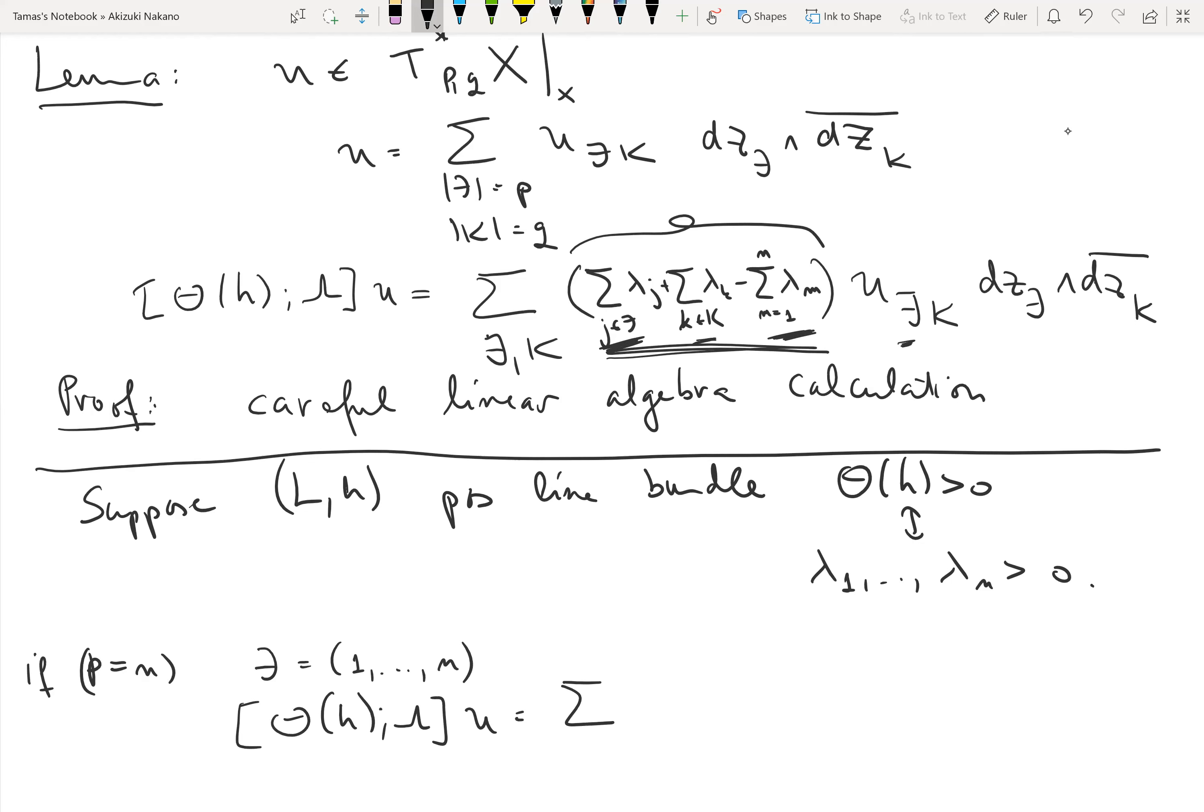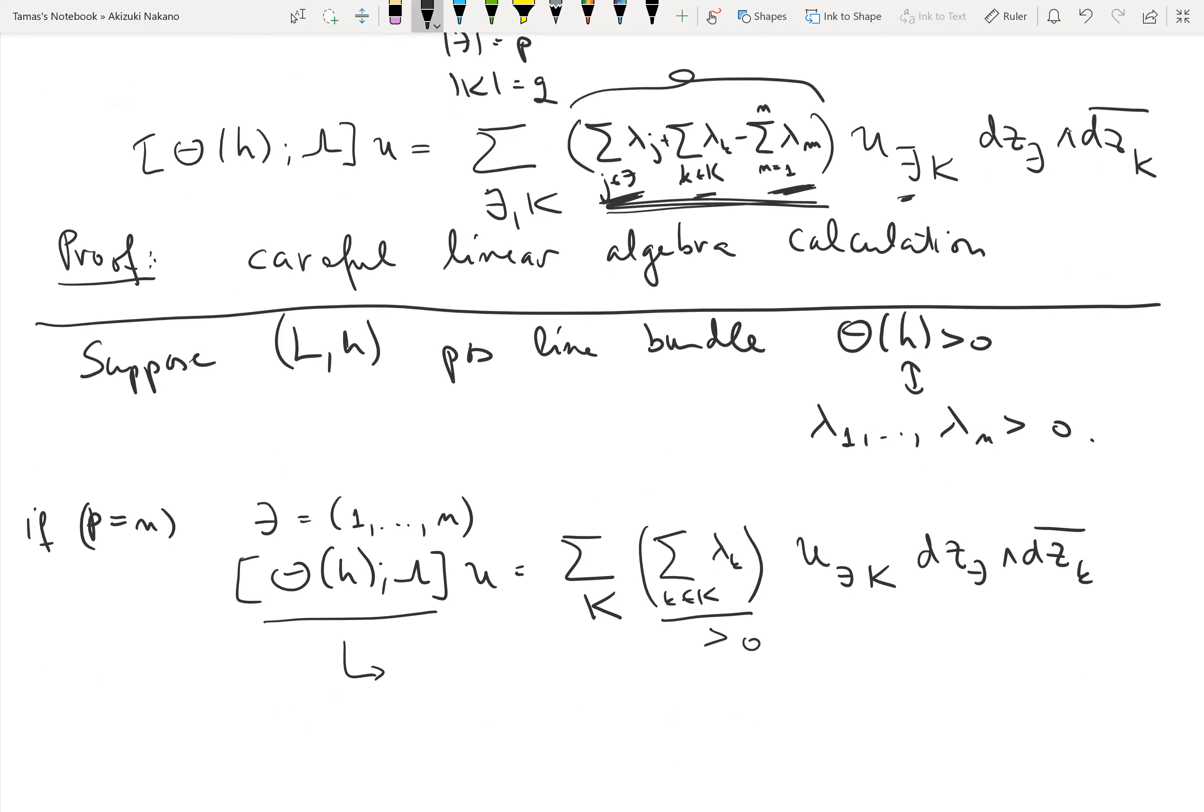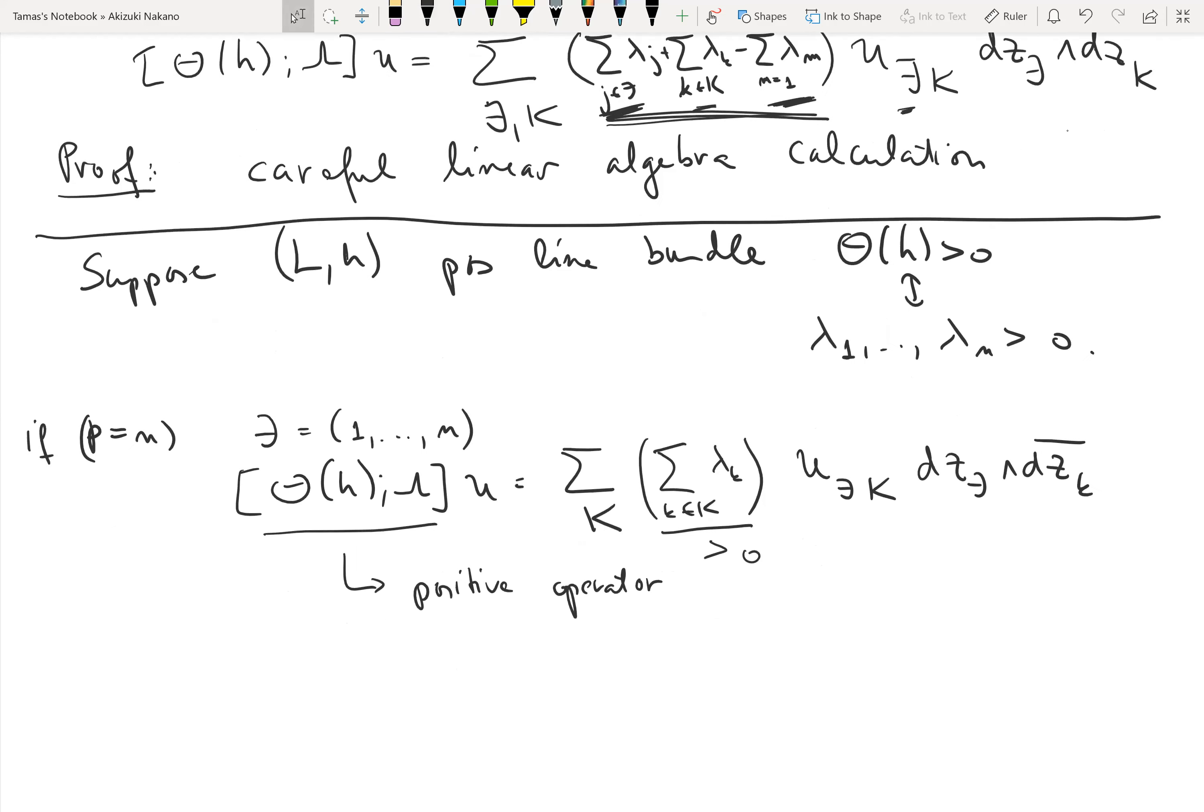So all I'm left with is the middle part. In this case, the theta_h lambda commutator is nothing but sum over just k of lambda_k u. In particular, this expression is definitely going to be always positive, so in this case this is a positive operator.